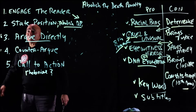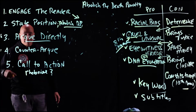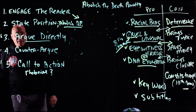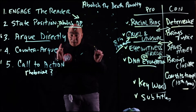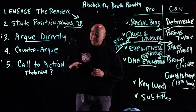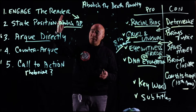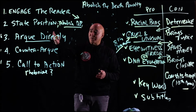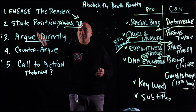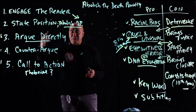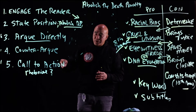So: one, engage the reader; two, state the position; three, argue directly; four, counter-argue. Now let's look at section five, the call to action. Two bolded subtitles work very effectively here. Do not put 'Call to Action' as your bolded subtitle — you never point to the structure. Do not use structural terms like 'I'm going to counter-argue here' or 'here's my position.' Those terms are just for your purposes to control the organization. You do not use structural terms in the essay.